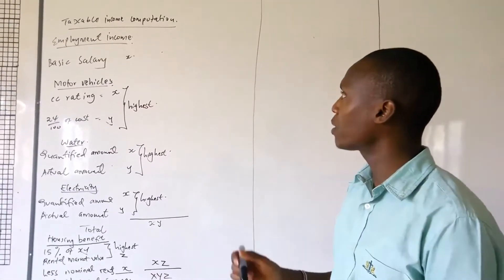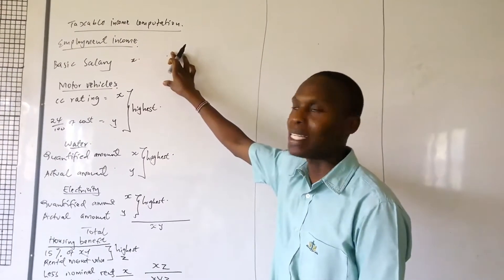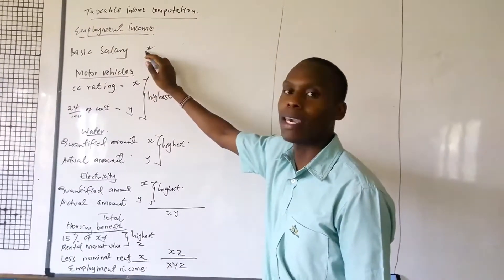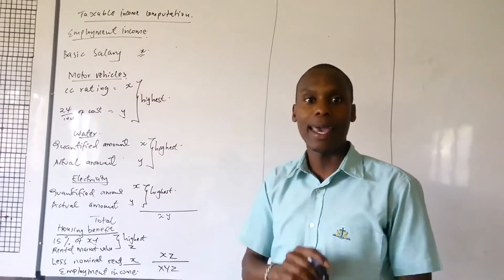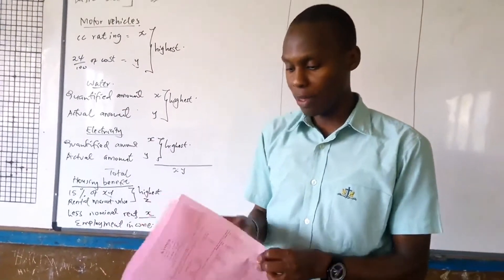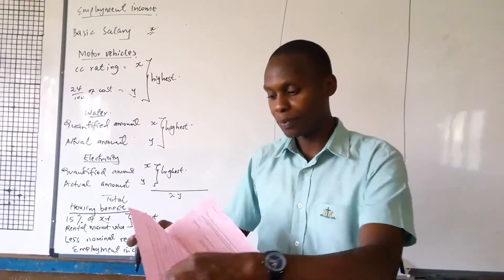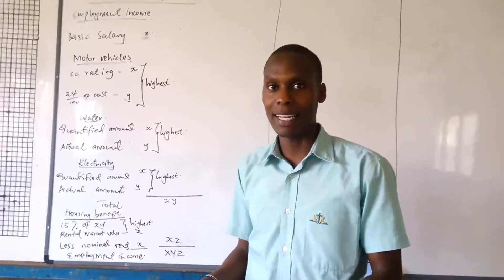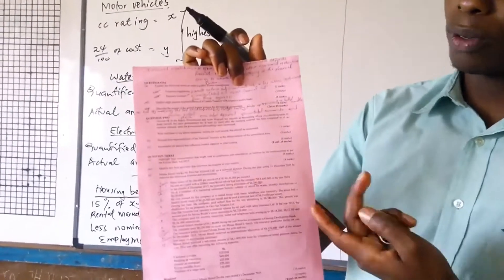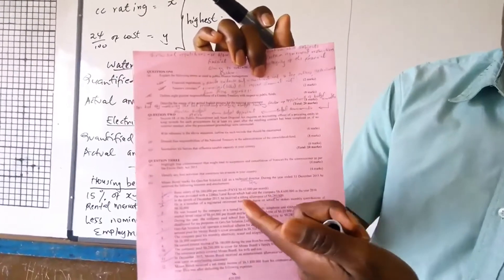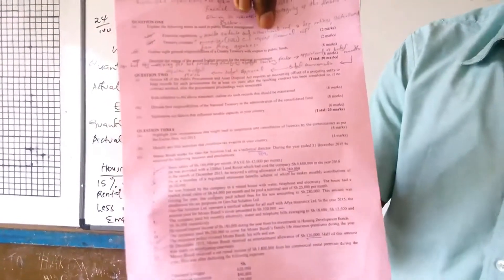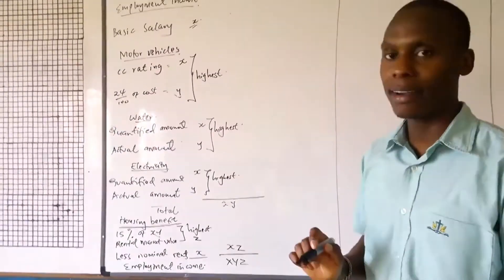Under normal circumstances, we start with the basic salary, which in our case we give the value X. Always make sure that in most questions, you will find it at the first line. It will be at the first line of the question. Then after that, we get the basic salary.